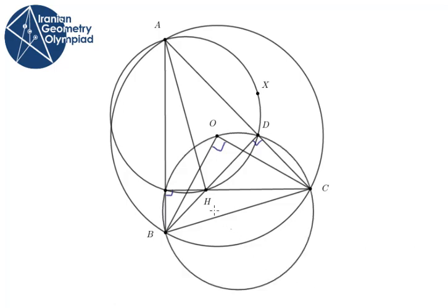Now look at angle HDA. It's 90 degrees. So the arc AH in the circumcircle of triangle AHD is 180 degrees. The arc HA is also 180 degrees, and the arc AX is 90 degrees.